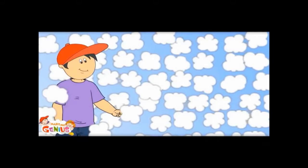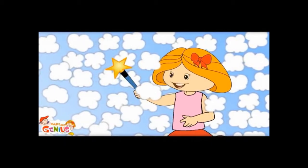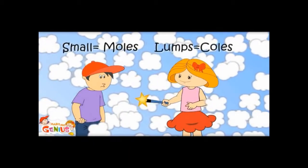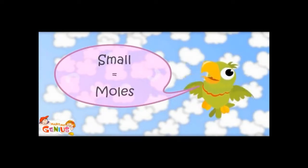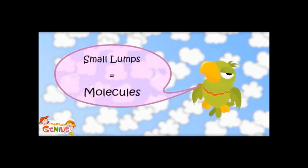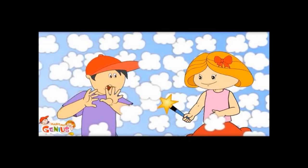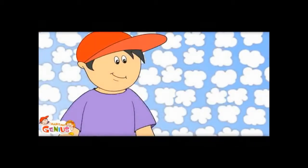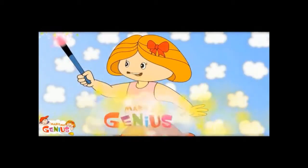Let's first enter the solid. What are these small, small things? These are small lumps. Everything in the world is made of small molecules. In Greek, small is 'moles' and lumps is 'coals,' so small lumps are called molecules. It is very tight here — I can't even move my hands. Molecules in solid are very close to each other, so they have less space to move. That is why they move very slowly and are very tightly packed — that is why they have a definite shape. Now let us move into liquid.